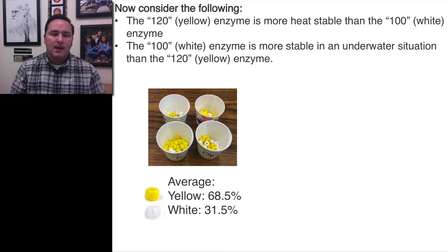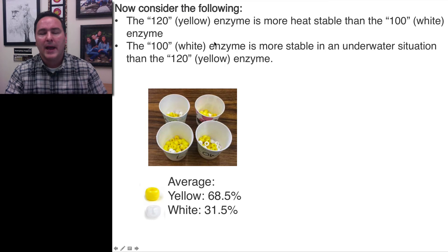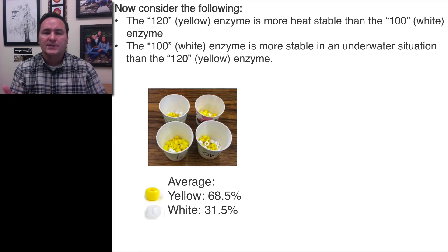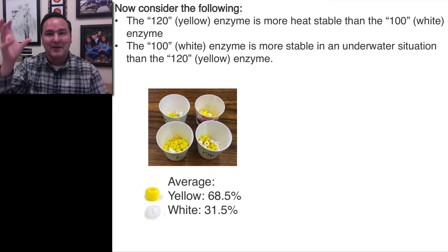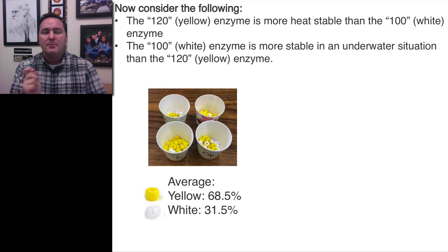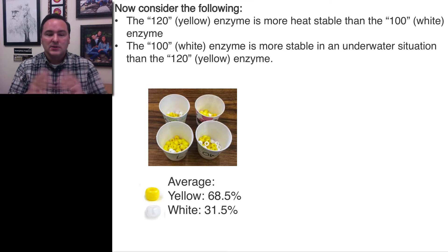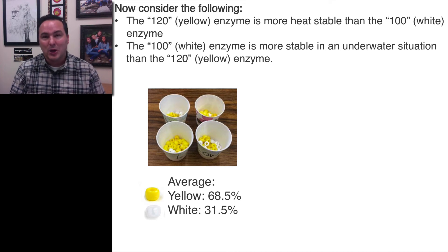Let's look at another change in allele frequency. I need to talk about these two alleles and their biology. The 120 enzyme, which is our yellow bead allele, is actually more heat stable. Snails with this allele are on average a little bit better at surviving in warmer and drier temperatures — higher up in the tidal zones. Snails that have more of the 100 enzyme or white bead allele happen to be a little bit better at surviving in underwater situations. So it's not a surprise that in our original populations, the ones in the mid and high had more yellow beads, and the ones in the low tide zone had more white beads.